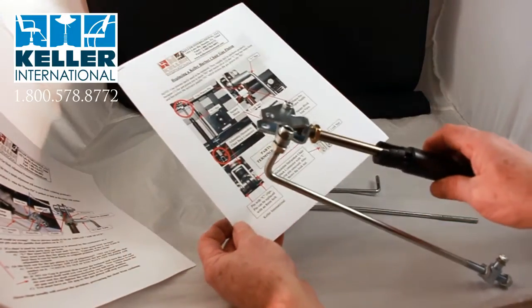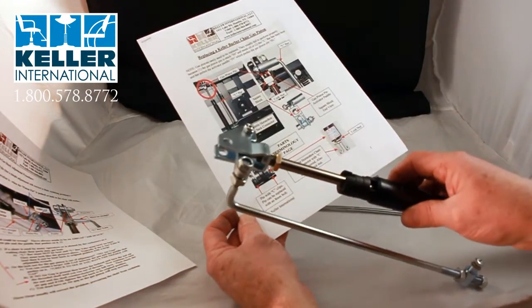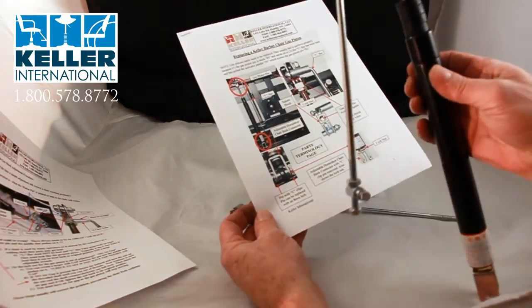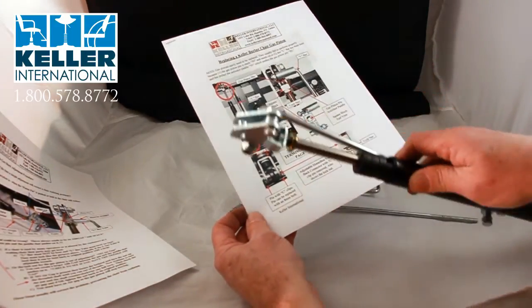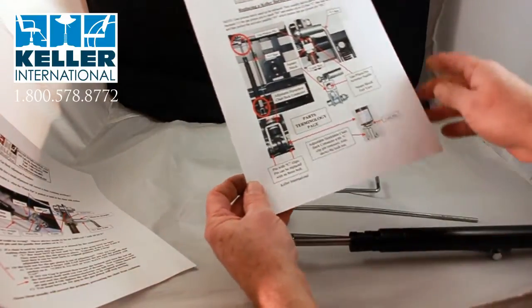These are basically the gas shocks that we use in our various products. This is one off a barber chair. It also fits a couple of our other chairs. We have procedures for replacing the gas shocks.